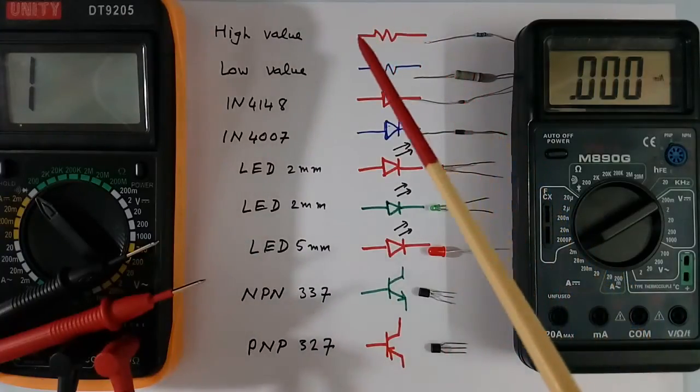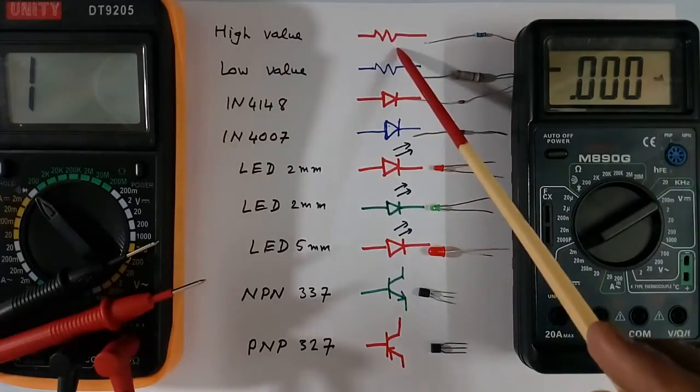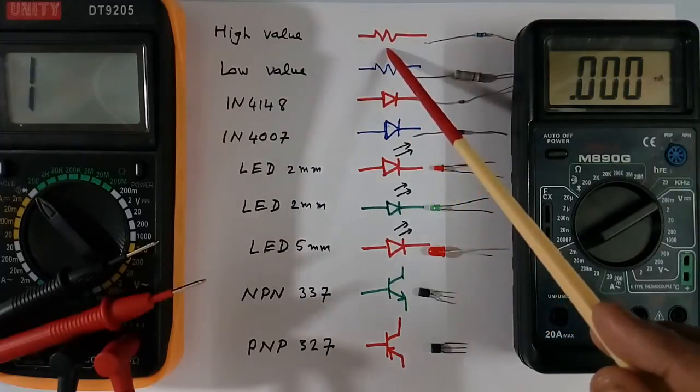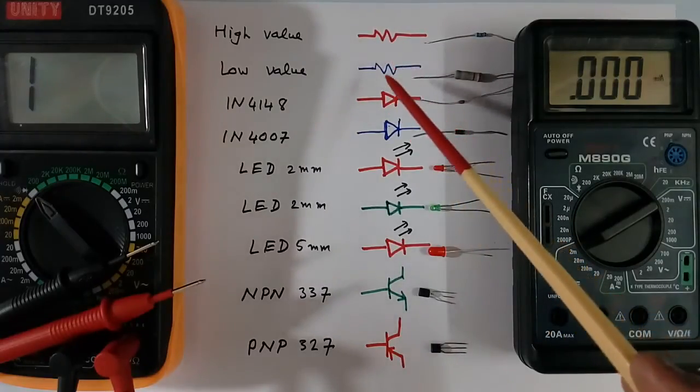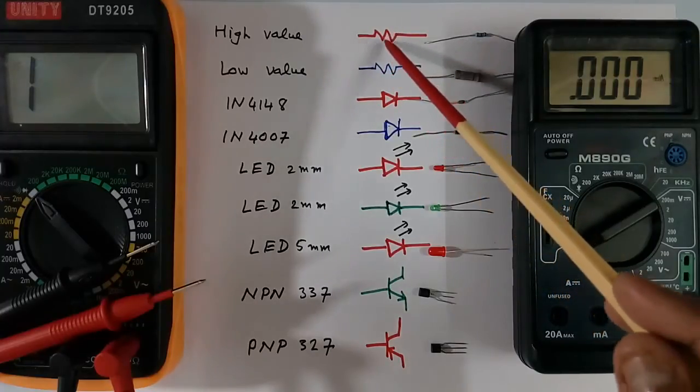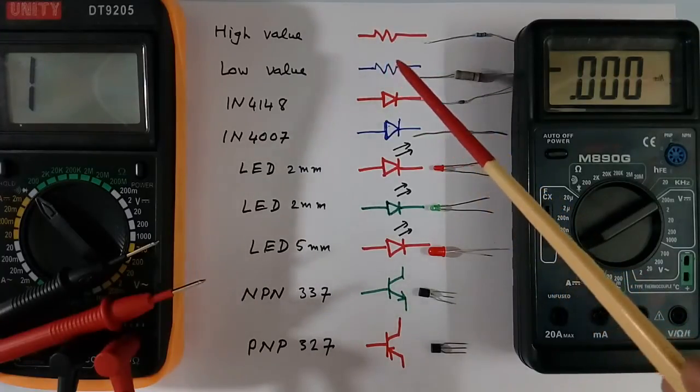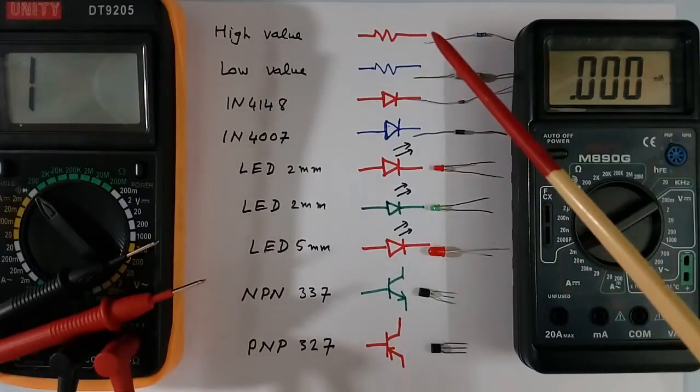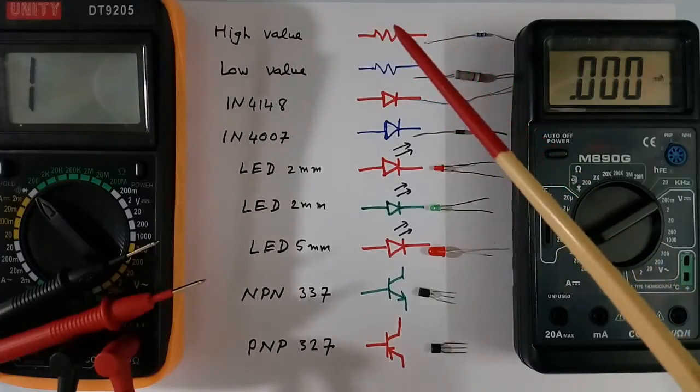I have two resistances. One resistance is very high value, more than 2 mega ohms, and another is very small value. When we measure high value and low value resistor, we have to keep some precautions. Those precautions I will tell.